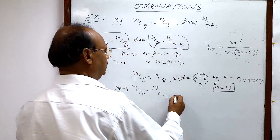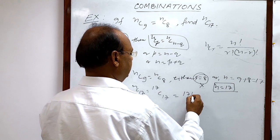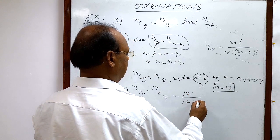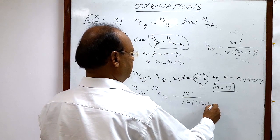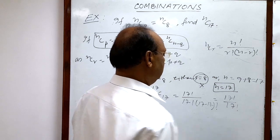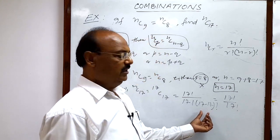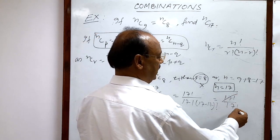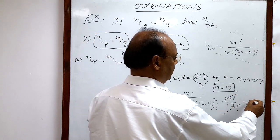So this is equal to 17 factorial by 17 factorial, because (17-17) factorial is 0 factorial. And as you know, 0 factorial is equal to 1. Finally, 17 factorial will be cancelled out here, so finally you are getting 1, and this will be the answer.